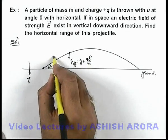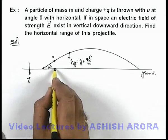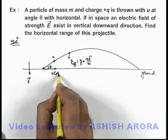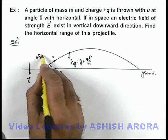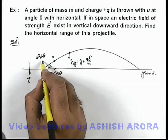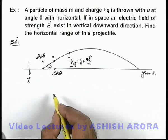Now in this situation if it is thrown with a speed u, it will be having two components: u cos θ in horizontal direction which will remain constant, and u sin θ in vertical direction, which will be affected by this effective gravity.